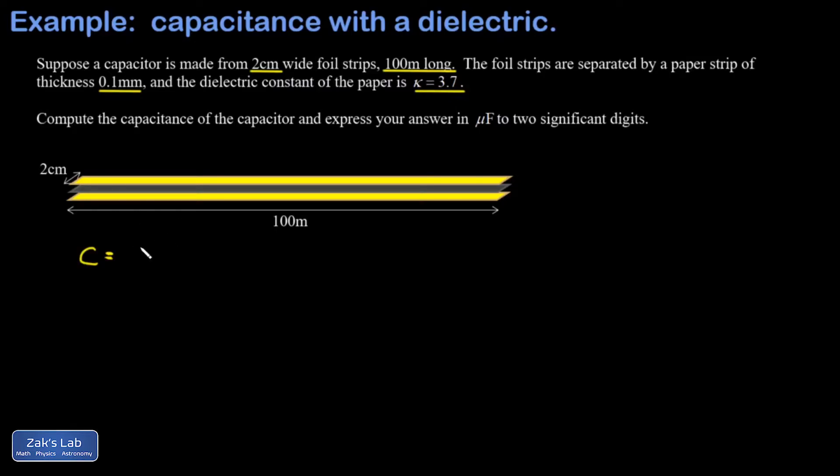So in a previous video, I qualitatively derived the dependence of capacitance on the geometry of the capacitor. Here, A is the area of each plate, D is the separation between the plates, and epsilon 0 is the permittivity of free space, which is 8.85 times 10 to the negative 12 farads per meter.